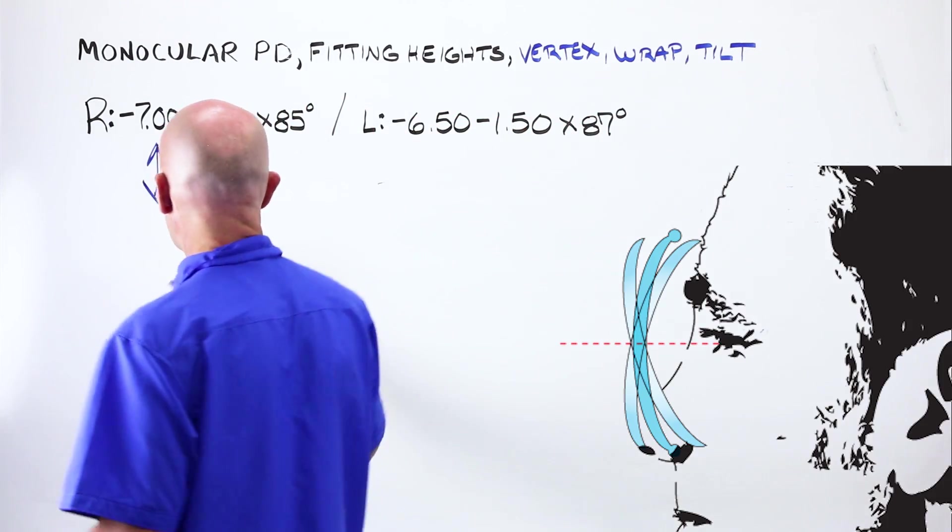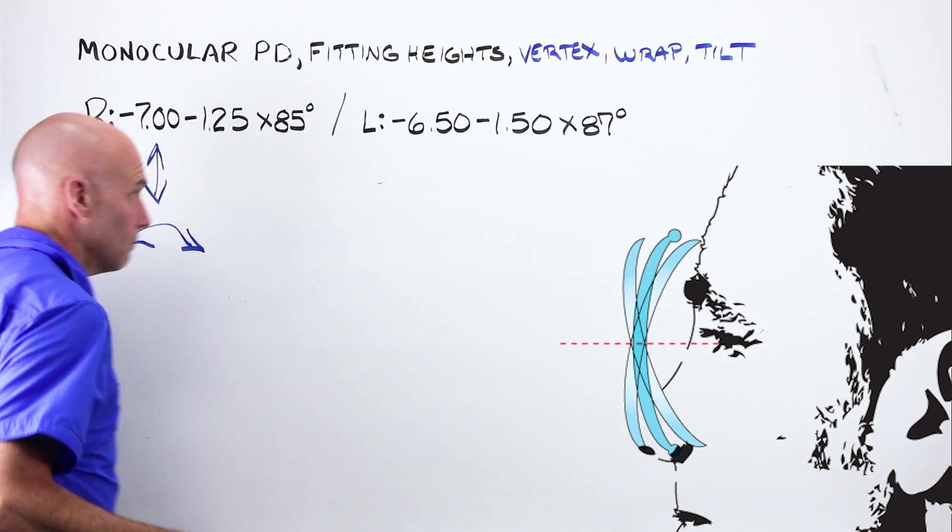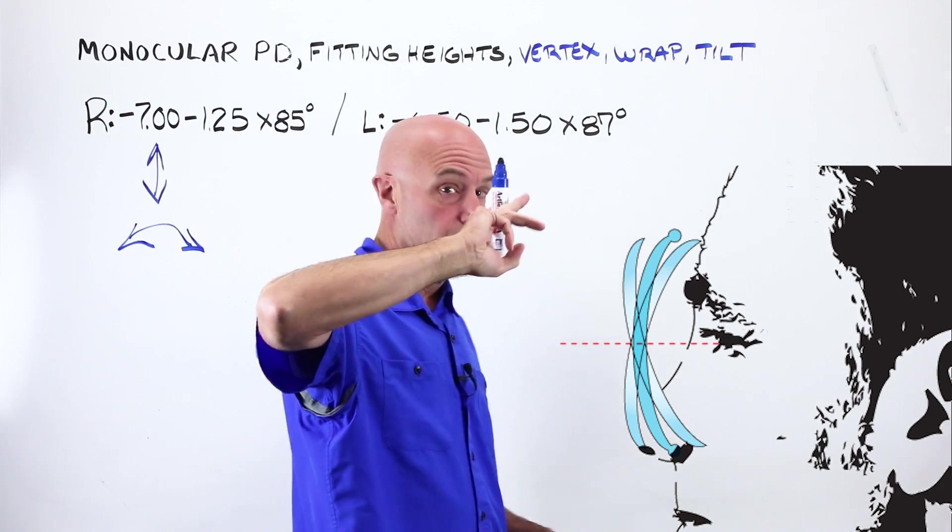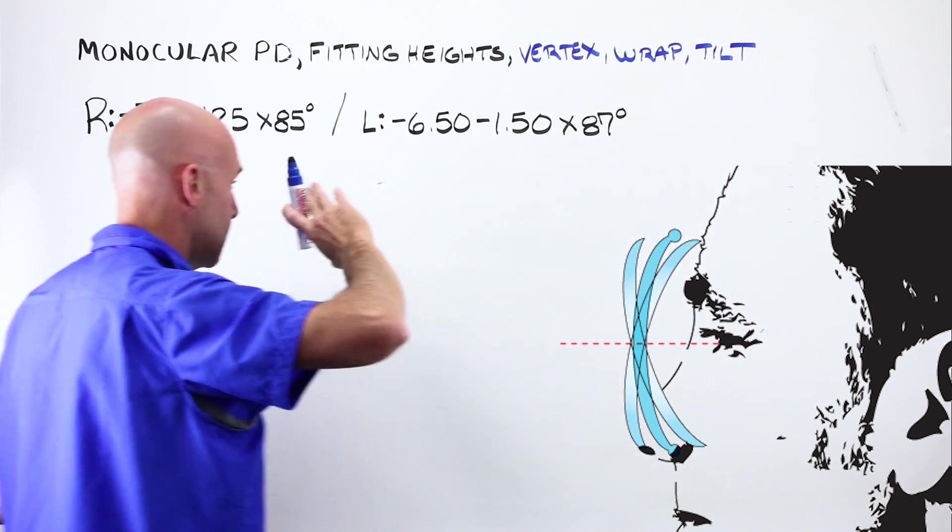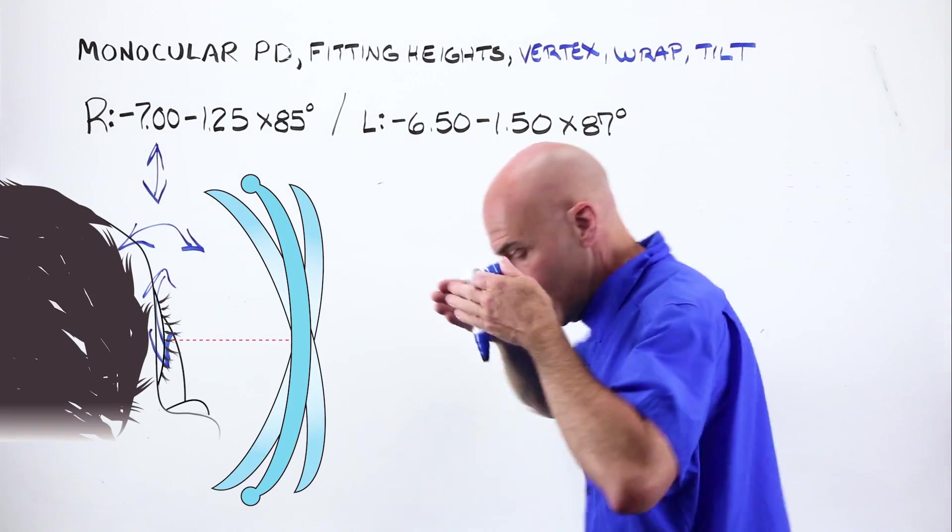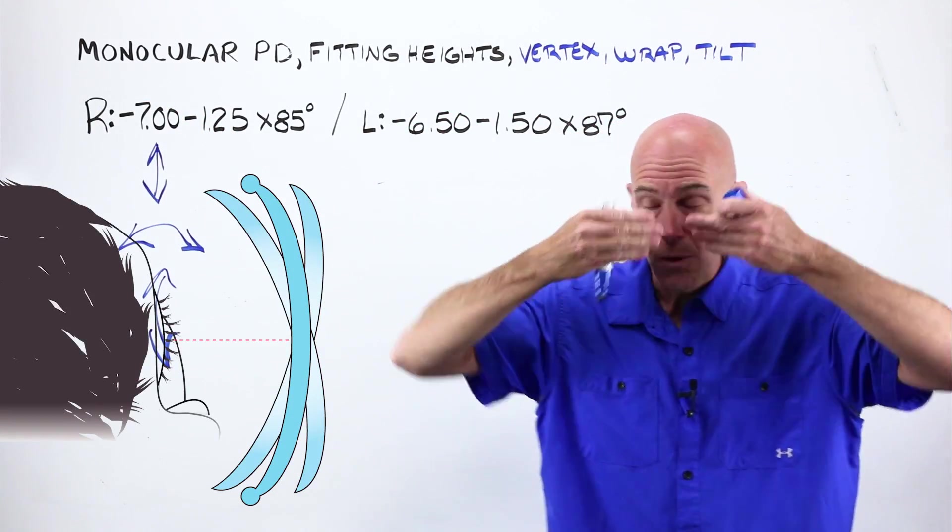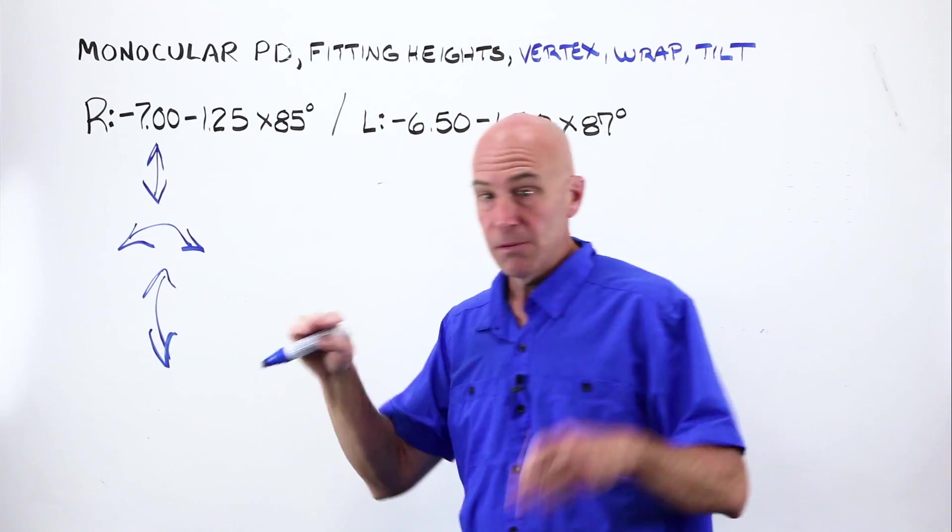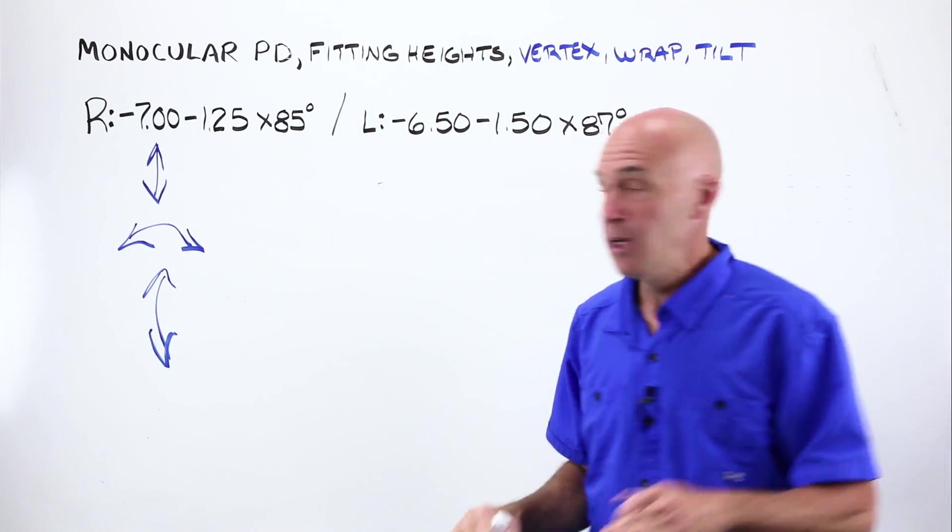If I tilt this lens this way, I induce cylinder in the 90th meridian. If I wrap my lens around face form, I'm going to induce power along the 180 in that meridian.